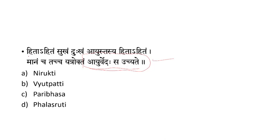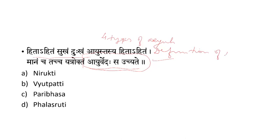From the same sloka we know there are four types of Ayu: Hita Ayu, Ahita Ayu, Sukha Ayu, and Dukkha Ayu. So four types of Ayu, as well as the definition of Ayurveda. Here are the options — we will go to the options.